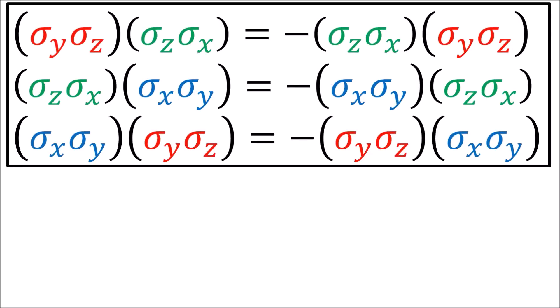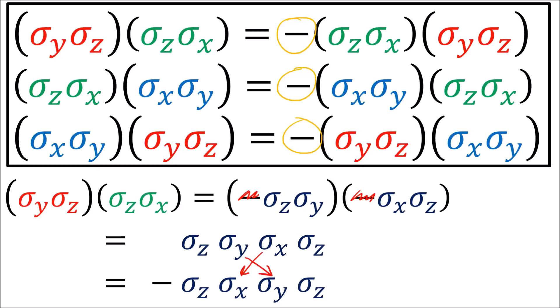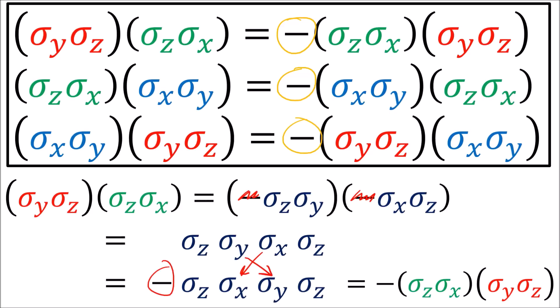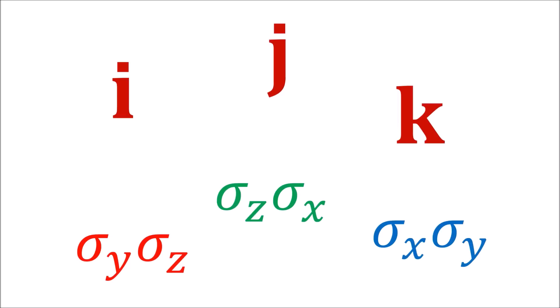It also turns out that these pairs of sigma matrices anti-commute with one another. We can show this just by swapping the individual sigmas step by step, and we end up with a negative sign in front.